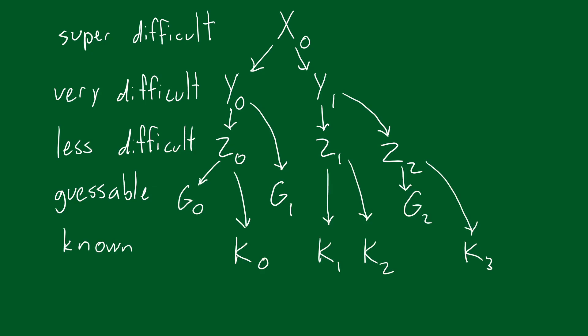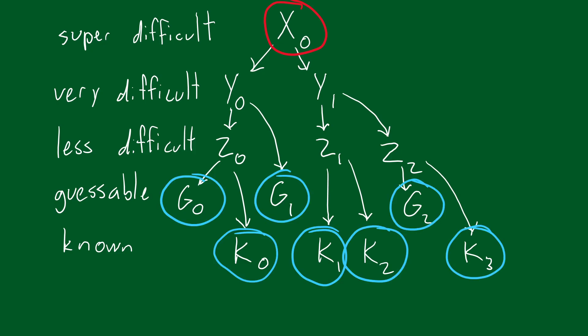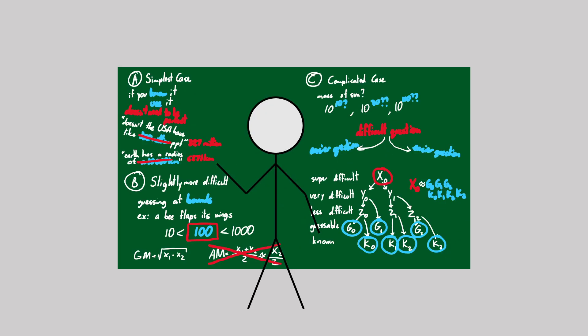This question-splitting process is where the majority of effort comes in. By wielding our human insights in the shape of formulas, we can take a single quantity and find a way to split it into ones that are easier to work with. Though extra strategies can be added, those are the key big ones: using prior knowledge for answers you already have, guessing at bounds for answers you can infer, and dividing and conquering for answers you need to search for.